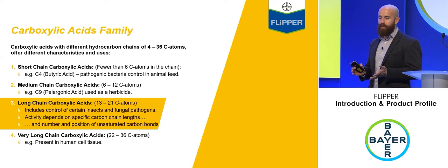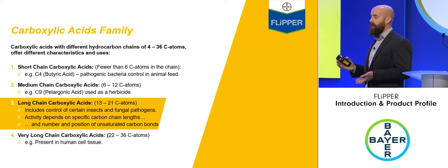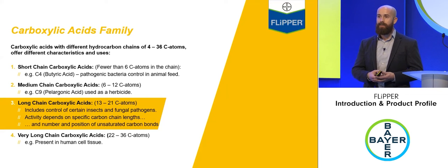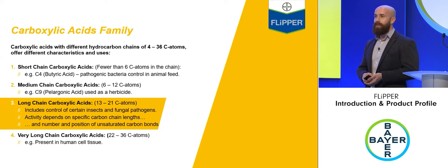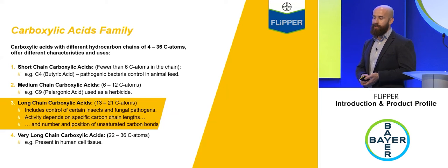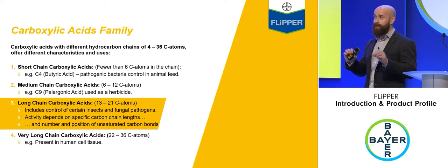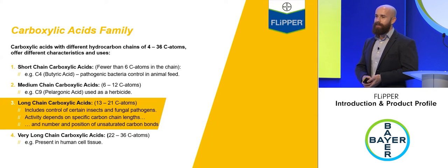Short-chain carboxylic acids are already used in agriculture to control bacteria in animal feeds. Medium-chain carboxylic acids are starting to be used as herbicides — for example, pelargonic acid. Then there are long-chain carboxylic acids, which is where Flipper's active ingredient sits. In the distillation and purification process, we select a very specific grouping of carboxylic acids that are active on insects as well as fungal diseases. The activity depends on the number of carbons on the chain and, importantly, where the unsaturated bond is, which changes how the chain folds and therefore how it interacts with biology.